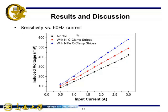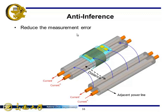Here shows the measurement result. We plot the measured voltage versus different input current. From this, we can see it's about 15% enhanced performance in nickel stripes and about 37% enhancement in nickel-iron stripes.